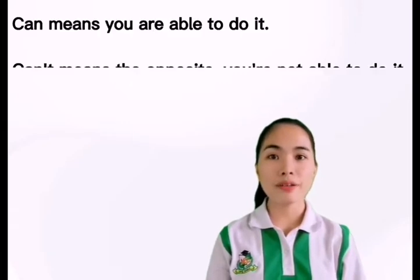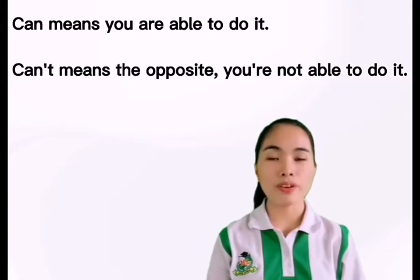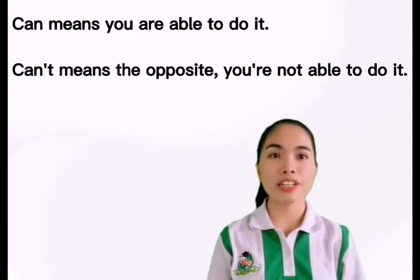Let's start first with the meaning of can and can't. Can means you're able to do something. However, can't is the opposite — you're not able to do something.